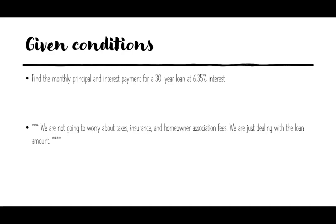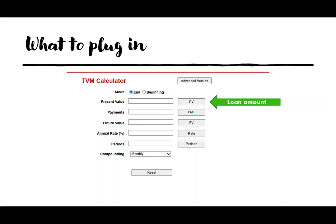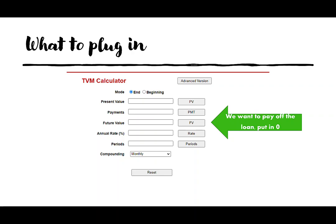When you get to the TVM calculator — TVM stands for time, value, money — I'm going to walk you through what each component stands for. The present value is the loan amount. The future value is what the loan will be worth in the future, and what we want is zero — we would like to pay it off. So you're going to put in zero for the future value. We're looking at the future value of the loan, not the future value of the house.